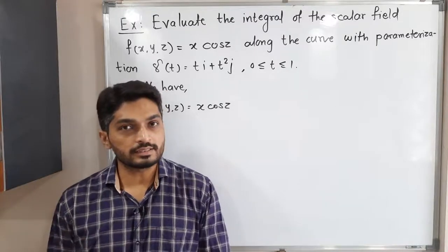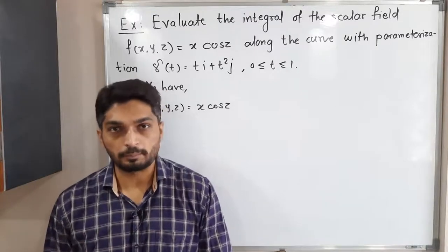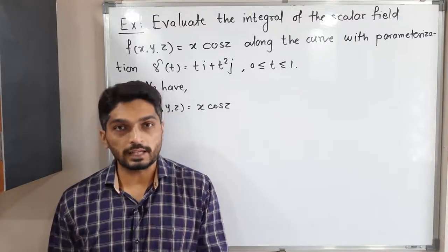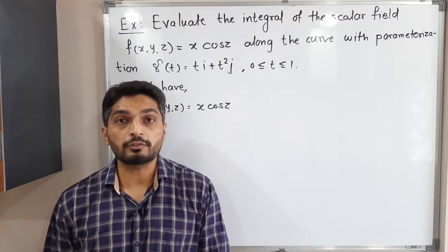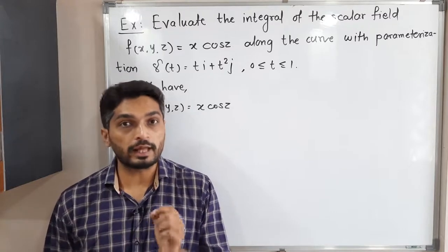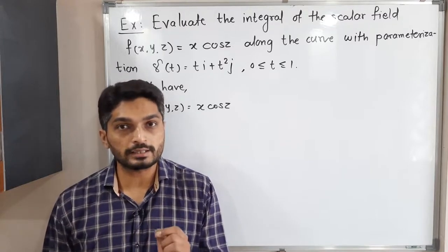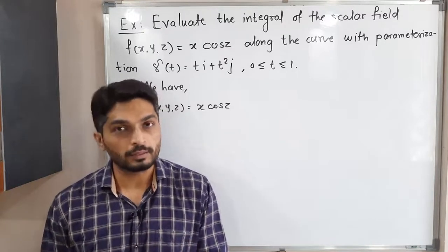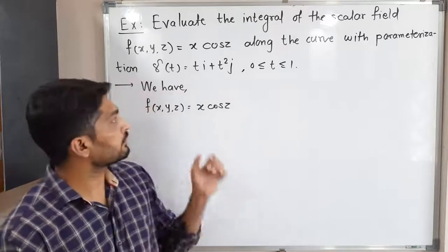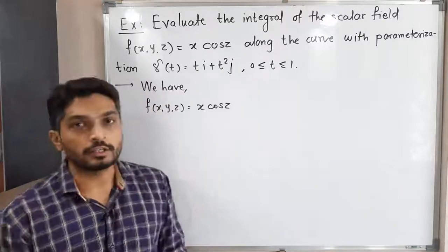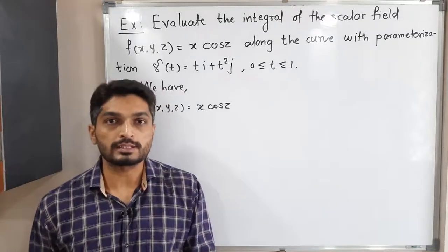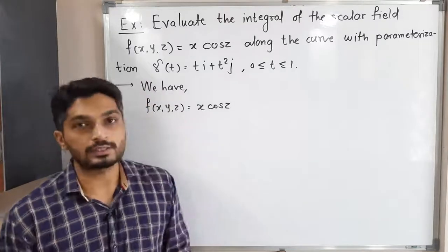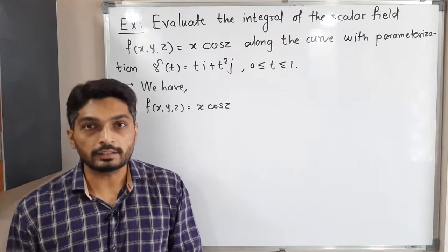Let us discuss this example. We have a scalar field and we have to find the value of the line integral of that scalar field over a given path. The given function is f(x, y, z) = x·cos(z).